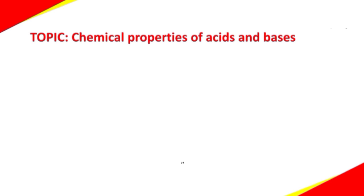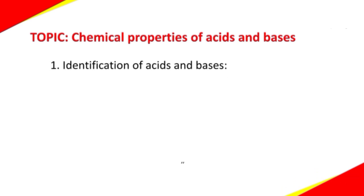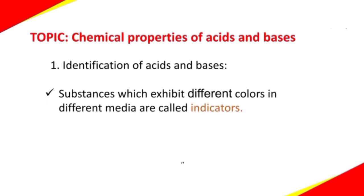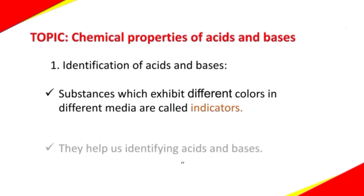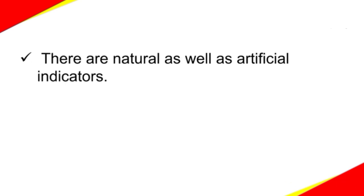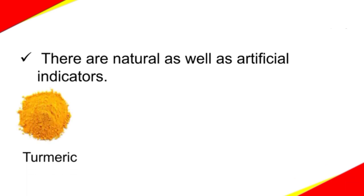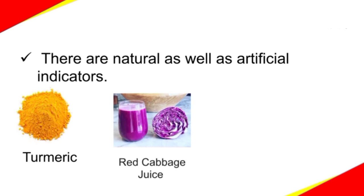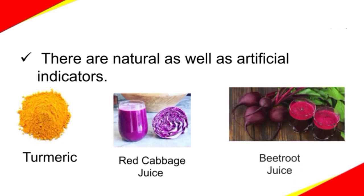Let's begin the topic: chemical properties of acids and bases. The first and foremost property is identification of an acid and a base. Some substances exhibit different colors in different media — such substances are called indicators. They help us in identifying acids and bases. There are natural as well as artificial indicators. The best example for a natural indicator is turmeric. We also have red cabbage juice, beetroot juice, etc. All these serve as natural indicators.